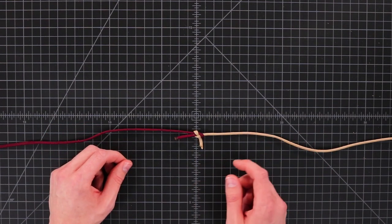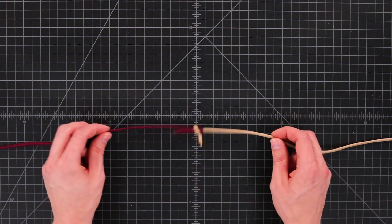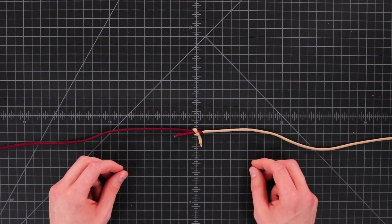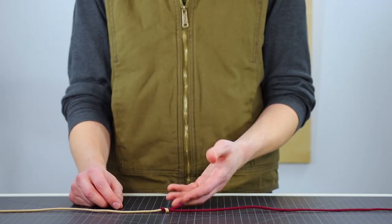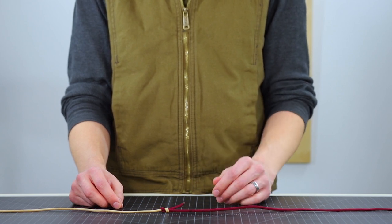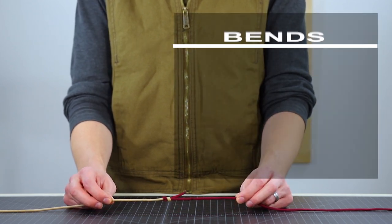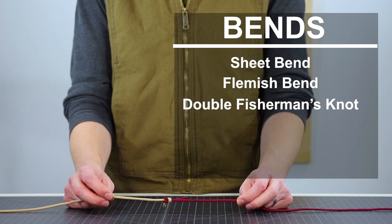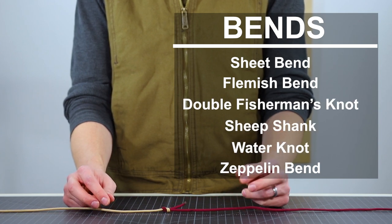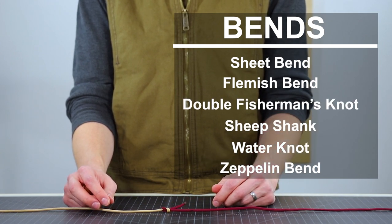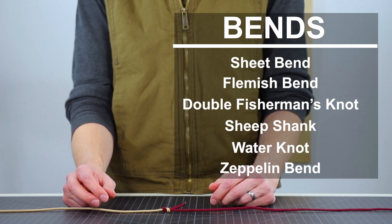This here is called a sheet bend. It's a nice easy bend to tie but it's not super strong. Any knot tied in a rope weakens the strength of that rope but some bends are better than others in keeping the strength of the rope. One of the best is the double fisherman's knot which is often used in climbing because of its strength.